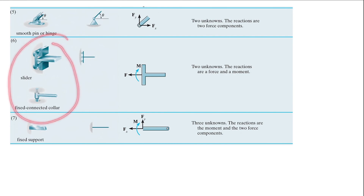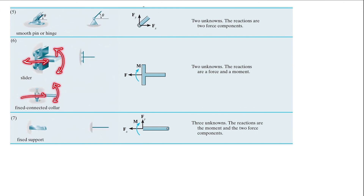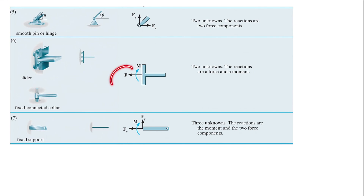Next, we have our sliders and fixed-connected collar. For this one, rotation is being prevented. Also, horizontal translation is being prevented. But the vertical translation is actually being allowed. So we only have two unknowns — one horizontal force and one moment. The last type would be our fixed support. For the fixed support, all translation — vertical and horizontal — and rotation are being prevented by the support itself. Thus, we would have three support reactions or three unknowns: one horizontal reaction, one vertical reaction, and then one moment.